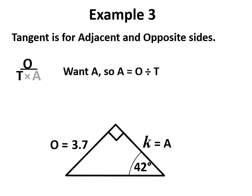That leaves O divided by T, O over T. The O opposite is 3.7, the T stands for tangent of the angle, and we get our answer 4.11. Same technique every time.